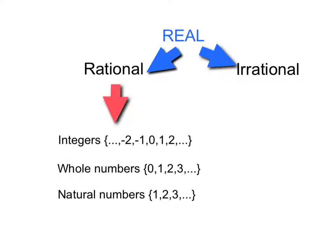Let's start with this picture. Here we have the real numbers — the number system that we use in our math class. Later on in your math career you may encounter different kinds of numbers, but this is what we are limited to in eighth grade. The real numbers are divided into two categories: we have the rational numbers on the left, and the irrational numbers on the right.